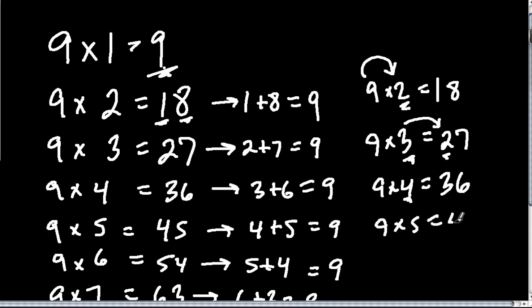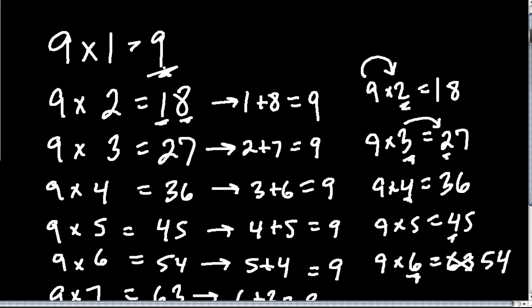9 times 5 equals 45. Again, the first number is 1 less than 5. 9 times 6 equals 63. Well, sorry, see, I'm wrong here, and even before I think about it, and there's a lot of different ways to think about it. Again, I'm following the pattern. The first digit here should be 1 less than the 6, so it's 54, because the 5 and the 4 need to add to 9.